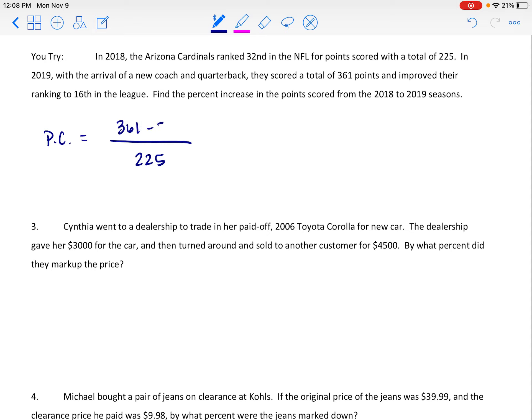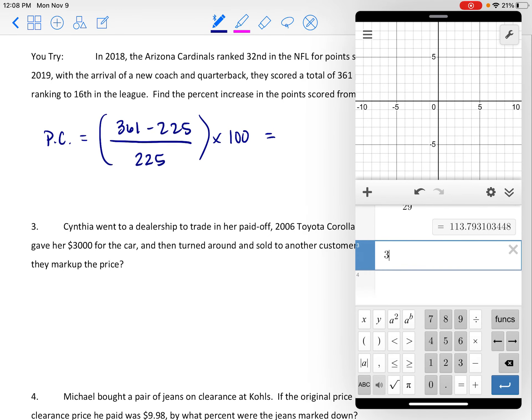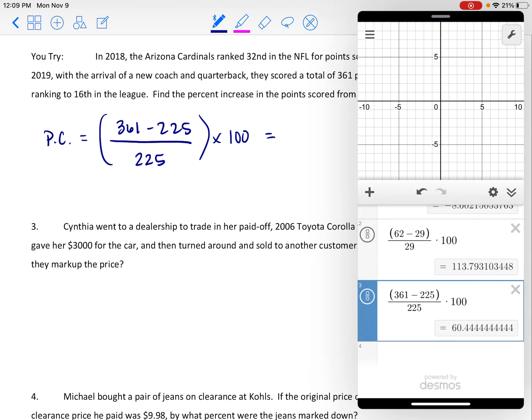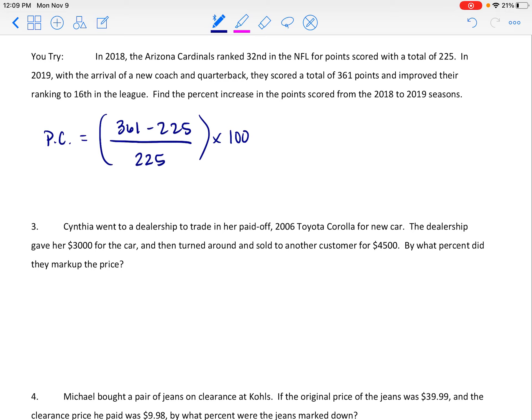So 361 minus that 225 is going to show us the change, and we're going to divide by the initial 225 to figure out that percent. This will be multiplied by a hundred. So 361 points minus the 225 points, divided by that starting 225 points, and then multiplied by a hundred to make this a percent, is 60.4 percent approximately.